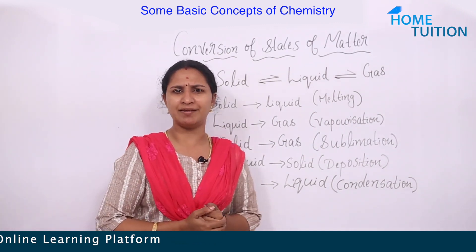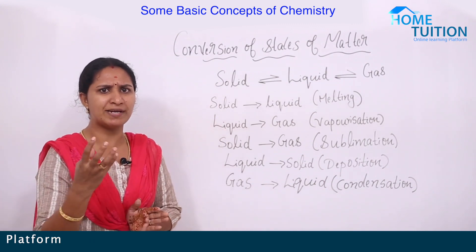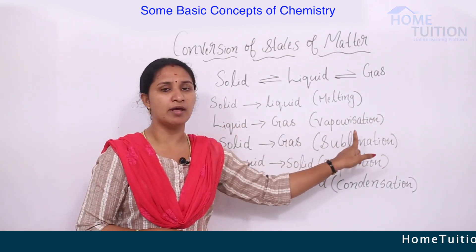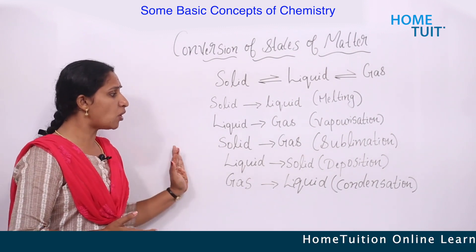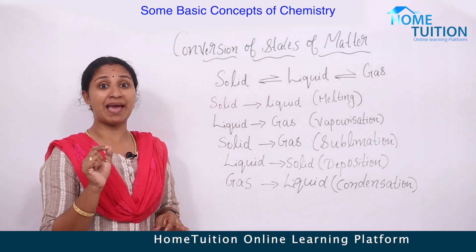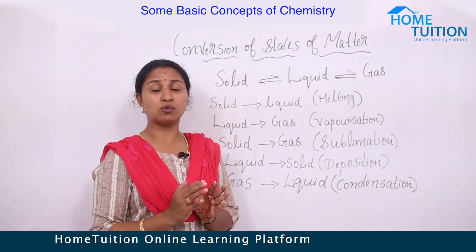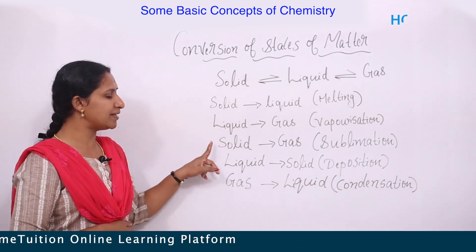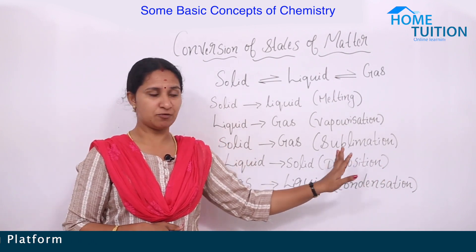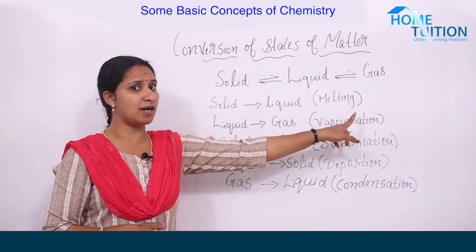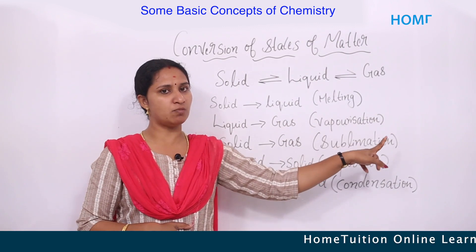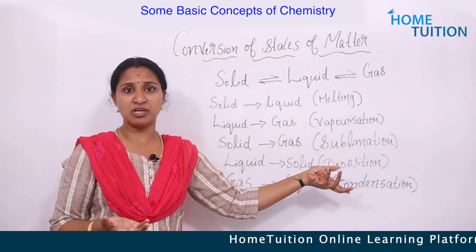Liquid to gas — the process is called vaporization. Sometimes solid directly changes into gas; this process is called sublimation. Examples of sublimation include camphor, ammonium chloride, and naphthalene. To summarize: solid to liquid is melting, liquid to gas is vaporization, and solid to gas is sublimation.